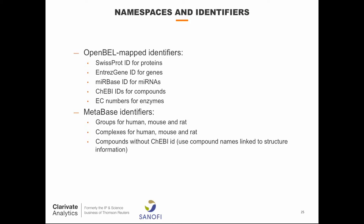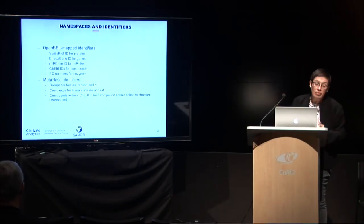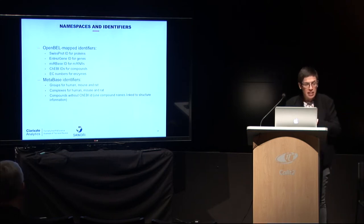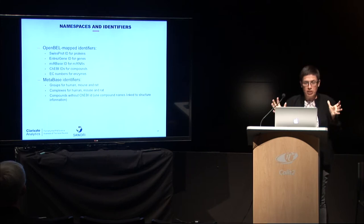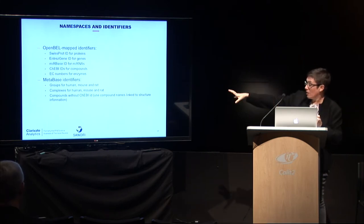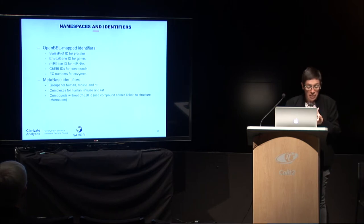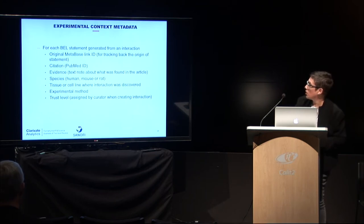This is what we used for identifiers, based on the namespaces that OpenBEL comes with. There are also some unique to our MetaBase groups for human, mouse, and rat complexes. In MetaBase, not all compounds have a ChEBI ID. Compounds in general are a little bit tricky in BEL at the moment. So what we had to do was generate as much BEL information as we needed, but because of the identifier problem with MetaBase compounds, we provide an accompanying file with INCHI structures so you can always resolve all of the compounds.